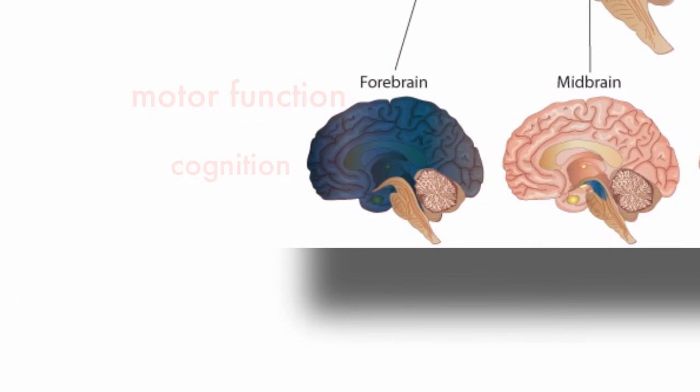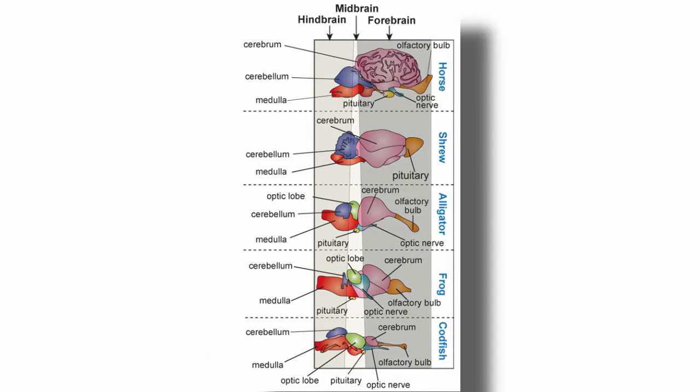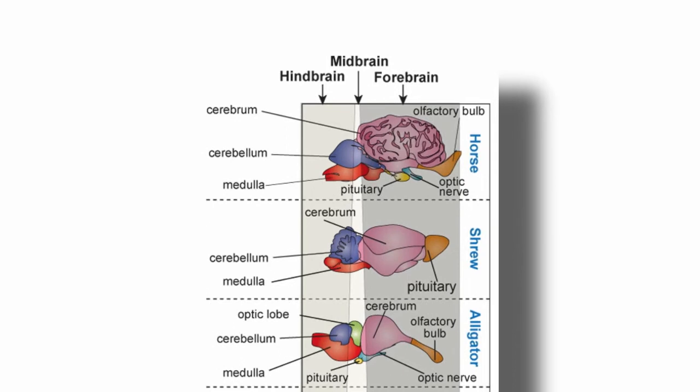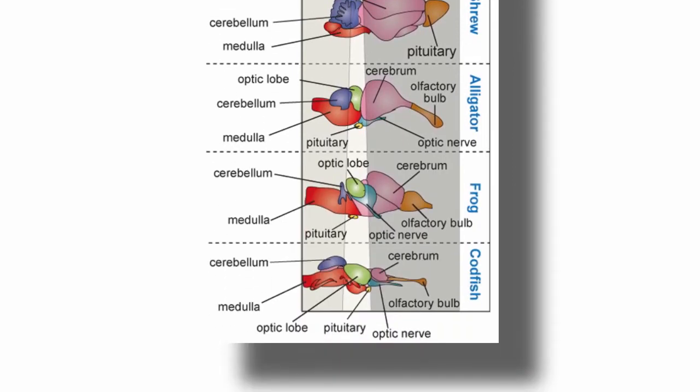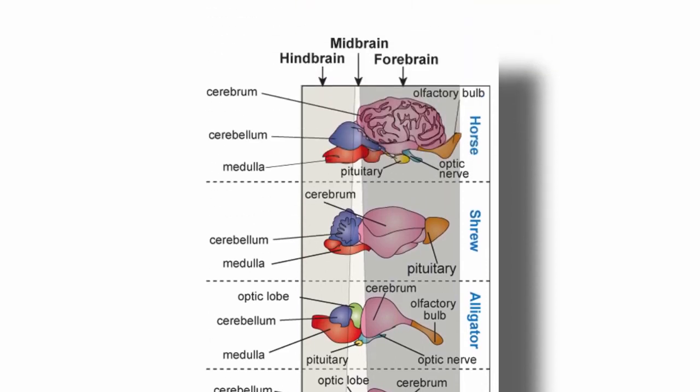Look at what changes as we look across different animal species. All animals need life support, so the hindbrain appears to be relatively similar proportionately across species. Likewise, the size of the midbrain, colored green, varies a bit by species but generally remains the same.